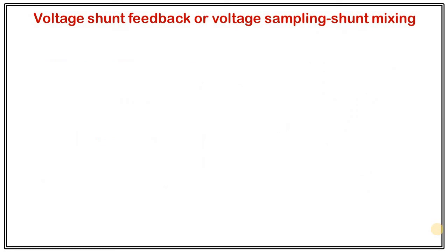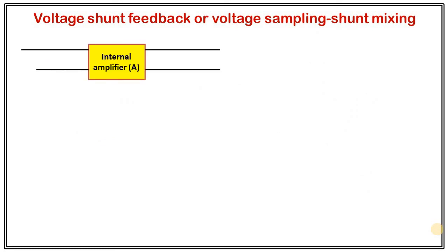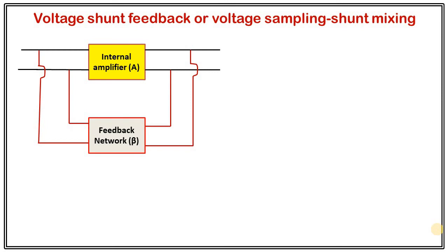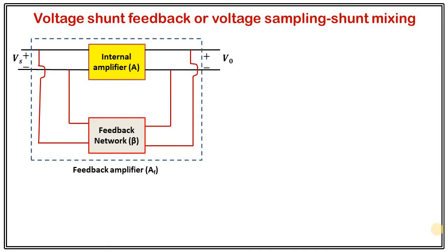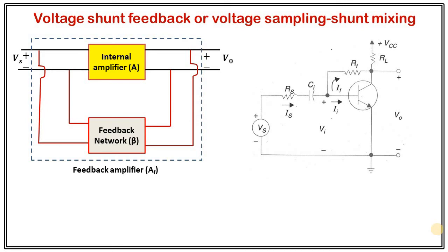The next topology is voltage shunt feedback. Here the internal amplifier has the feedback network connected in shunt configuration at both the input and output terminals. At the output, the shunt connection means this is voltage sampling; at the input, the shunt connection means shunt mixing. Therefore we call it voltage sampling shunt mixing. A practical example circuit of this configuration is also shown.